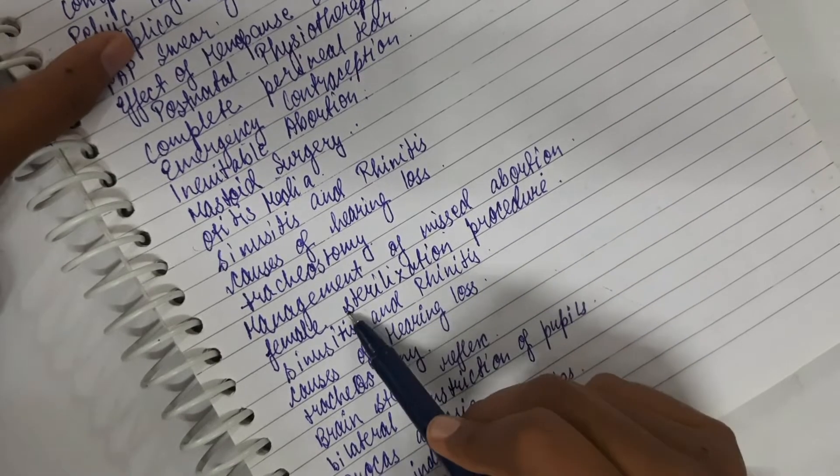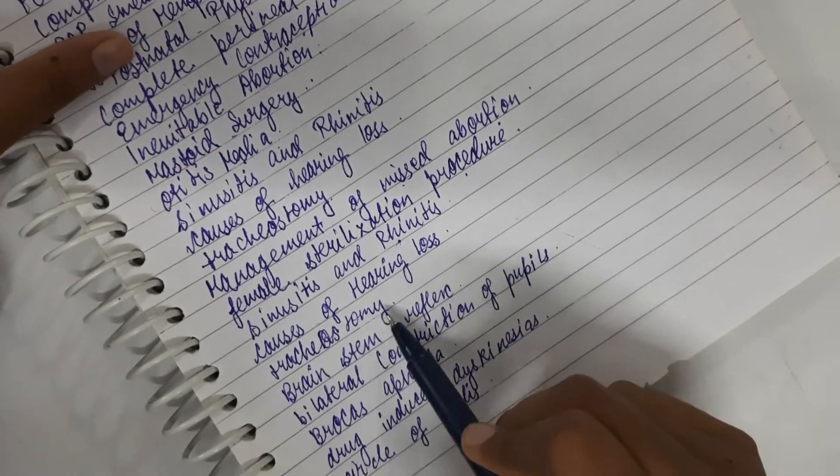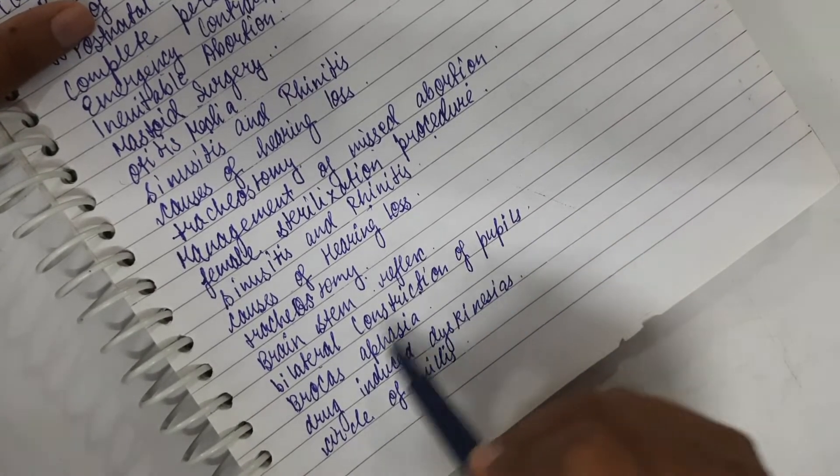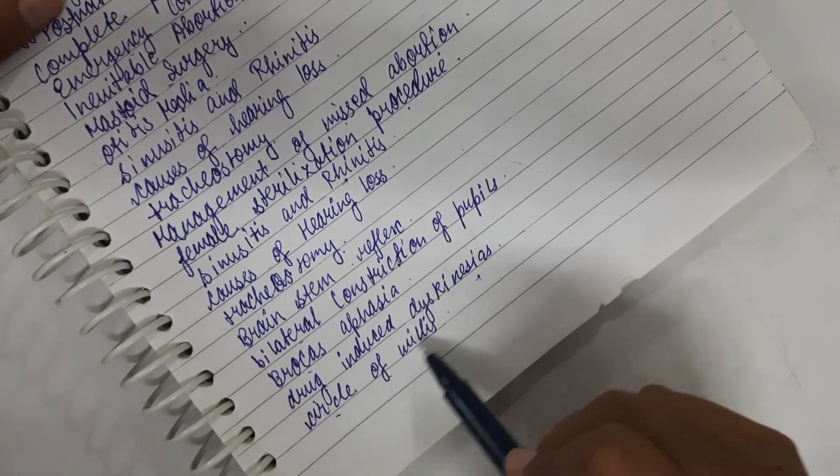Tracheostomy, management of missed abortion, female sterilization procedure, sinusitis and rhinitis, cause of hearing loss, tracheostomy, brainstem reflex, bilateral constriction of pupils, Broca's aphasia, drug-induced dyskinesia, Circle of Willis.